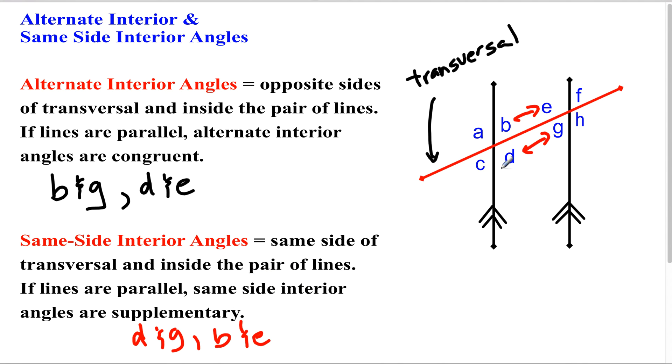So what do I mean by that? For instance, if this was 120 degrees, this angle would have to be 60. All right, so those are our other two relationships we're looking at in this chapter.